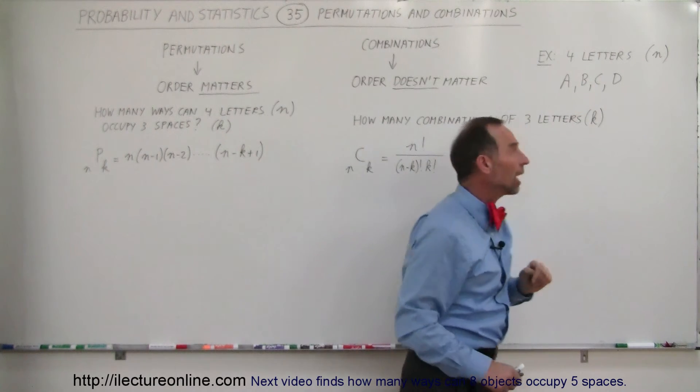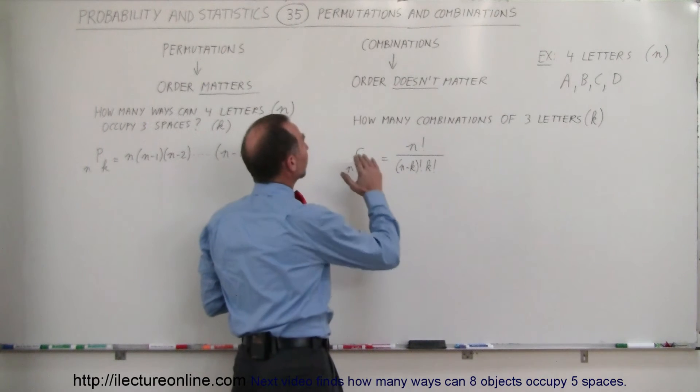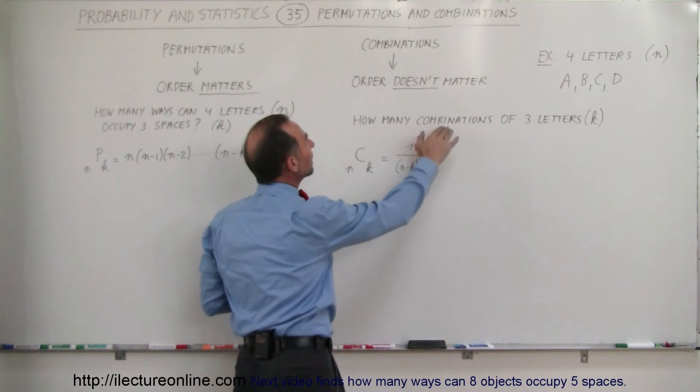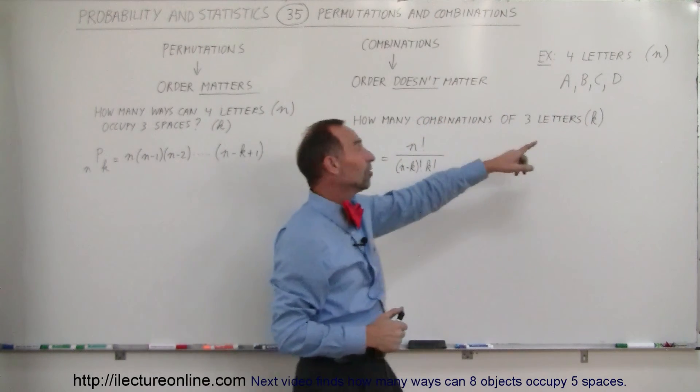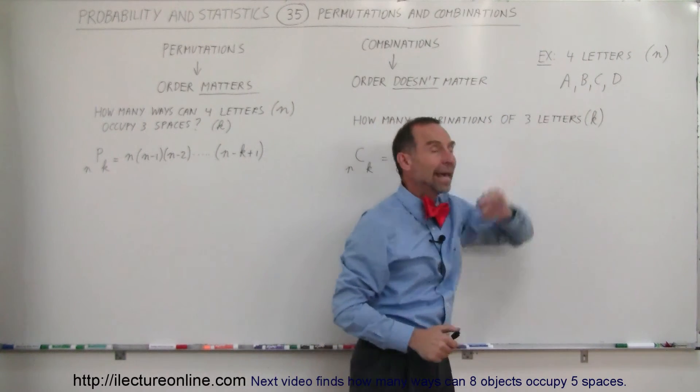There's four of them: A, B, C, and D. Now, what we're going to do is ask ourselves the question, how many combinations of three letters can you make with four letters? And so, three letters is K, K is three, N is four.